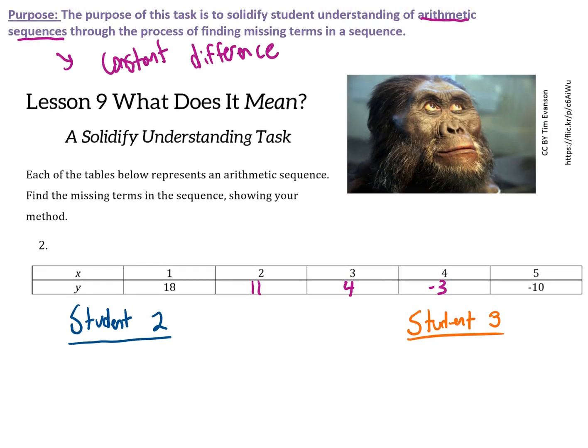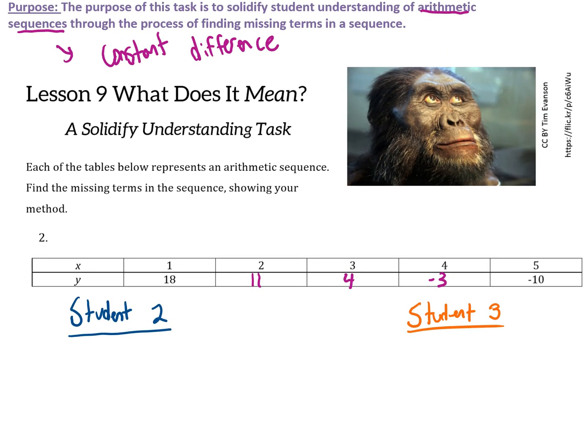Let's talk about some other strategies. Student 2 might figure out the same values by thinking about how far to travel from 18 down to negative 10. I figure that out by doing negative 10 minus 18, which is negative 28.